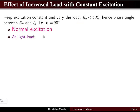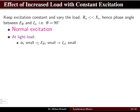We will discuss the effect of varying load with constant excitation under three different cases: normal excitation, under excitation, and over excitation. First we will focus on normal excitation. Under the normal excitation at light load condition, the value of the torque angle is very very small, which means the resultant EMF is also small and the current is also small.